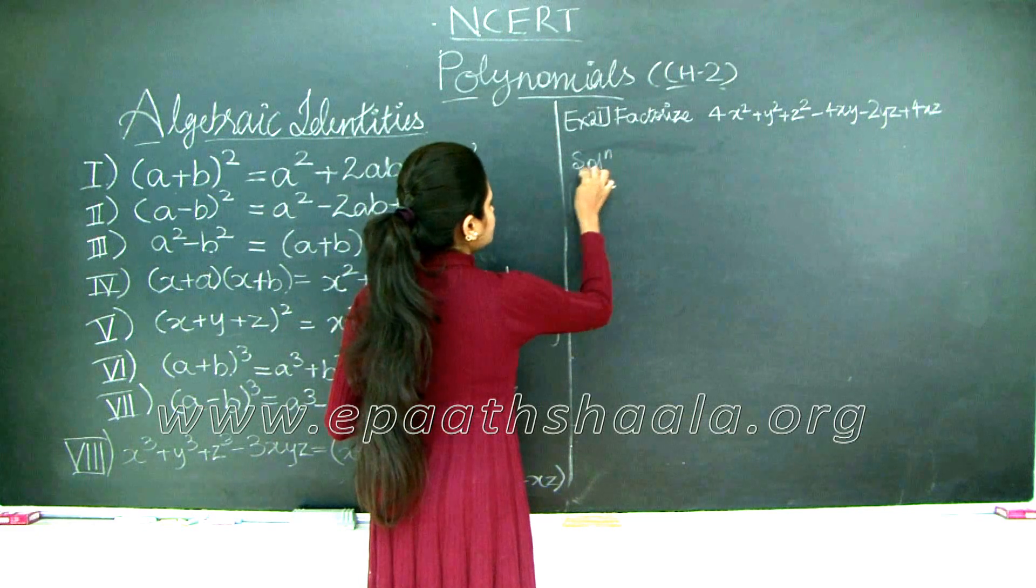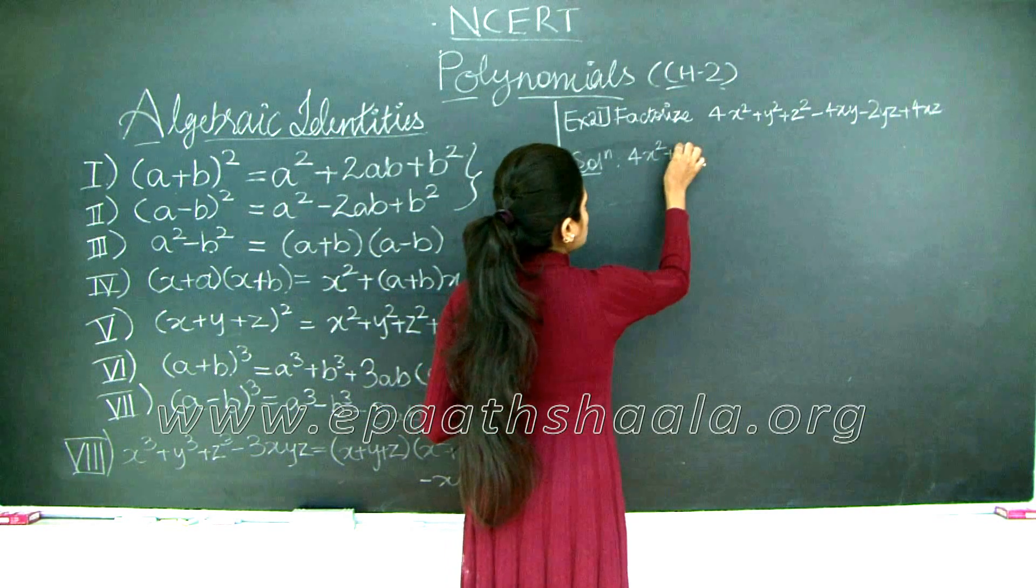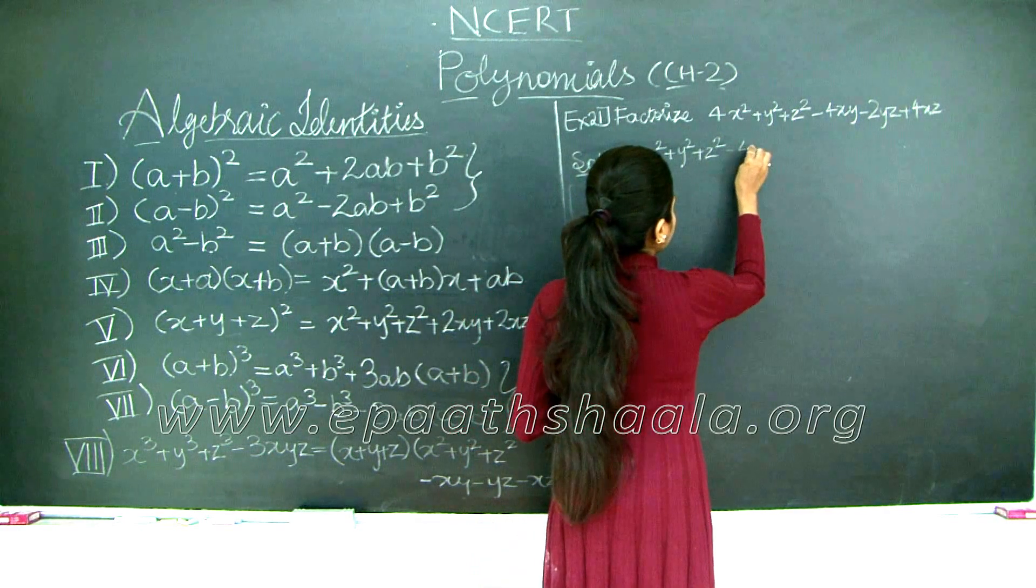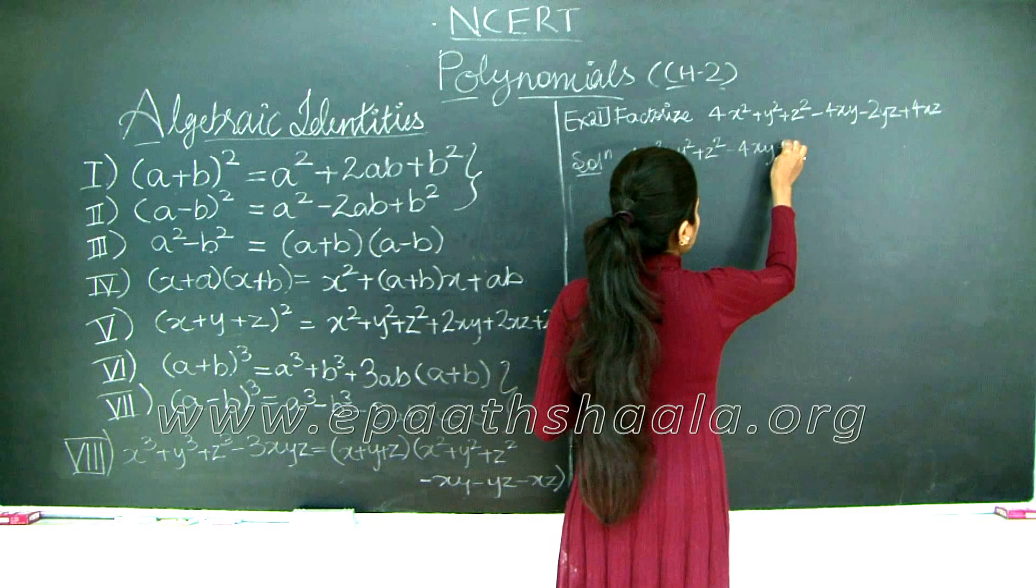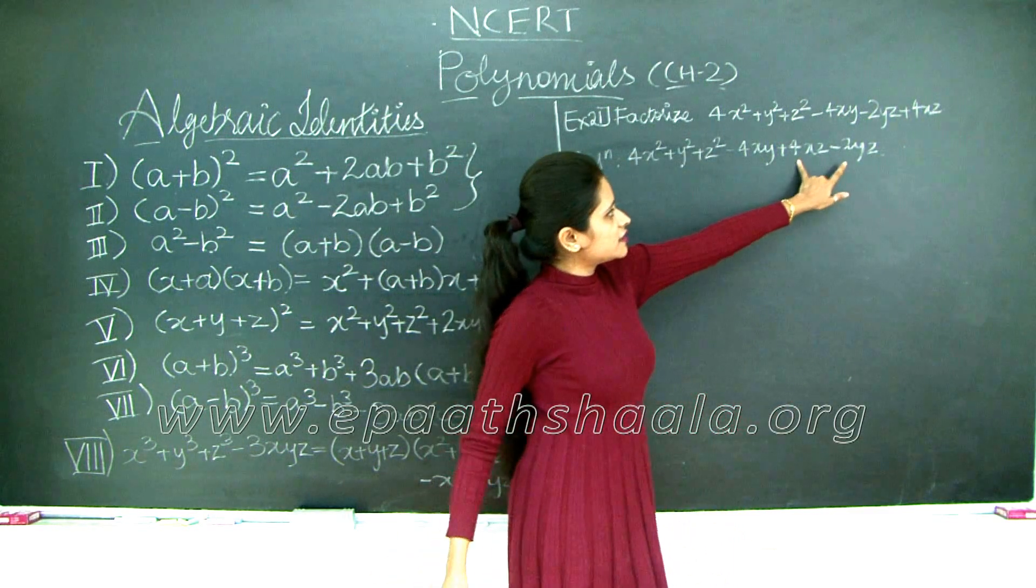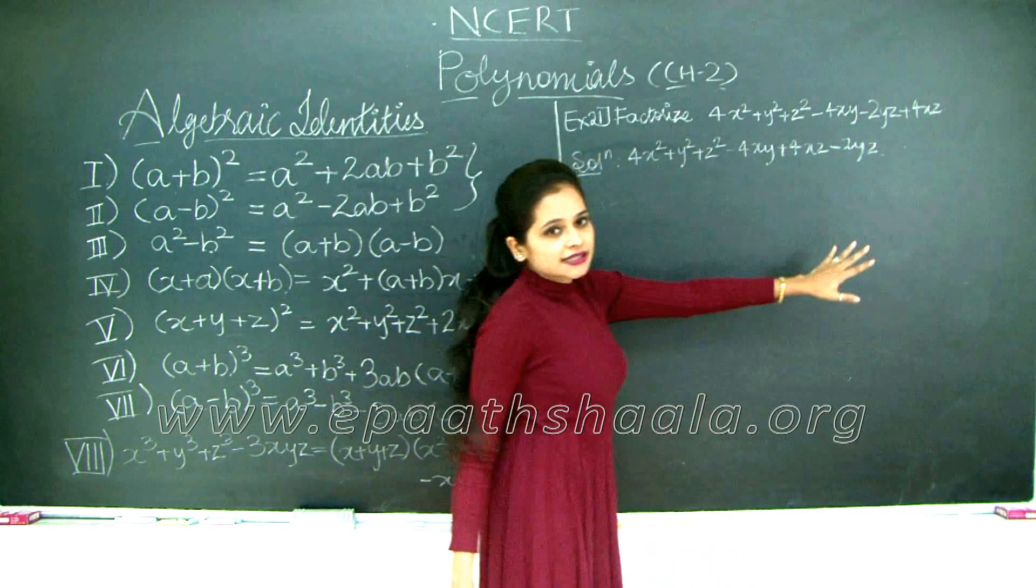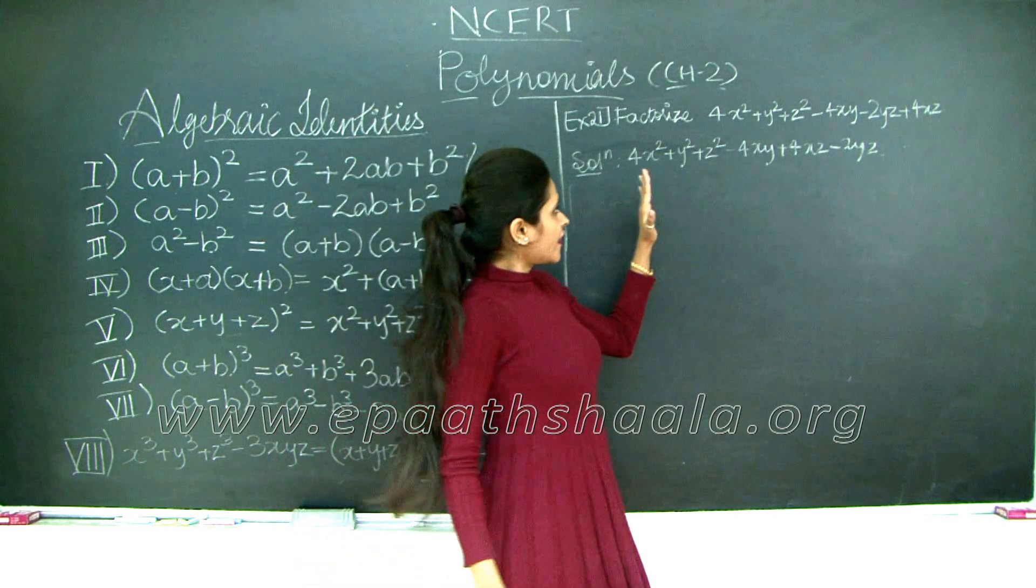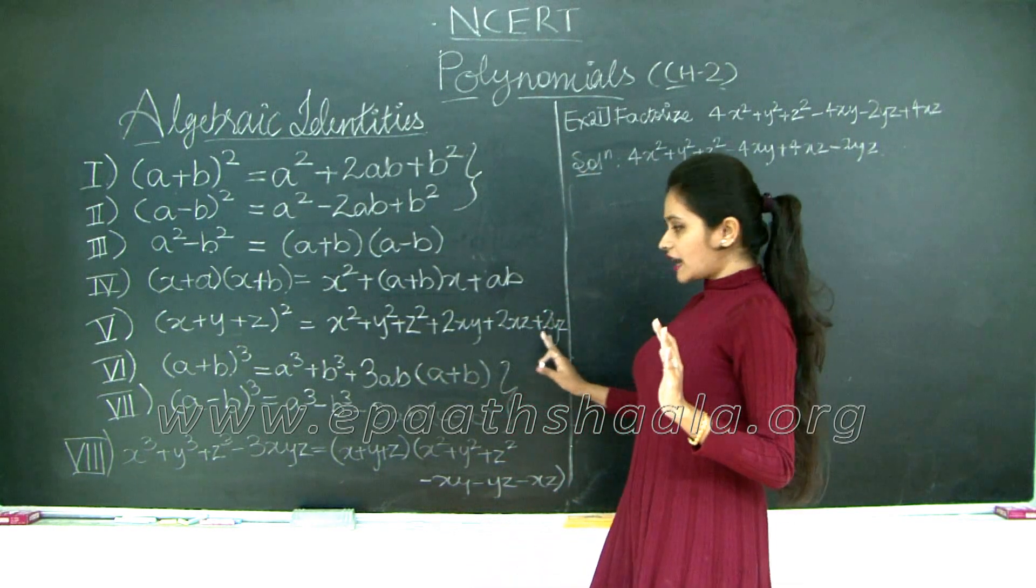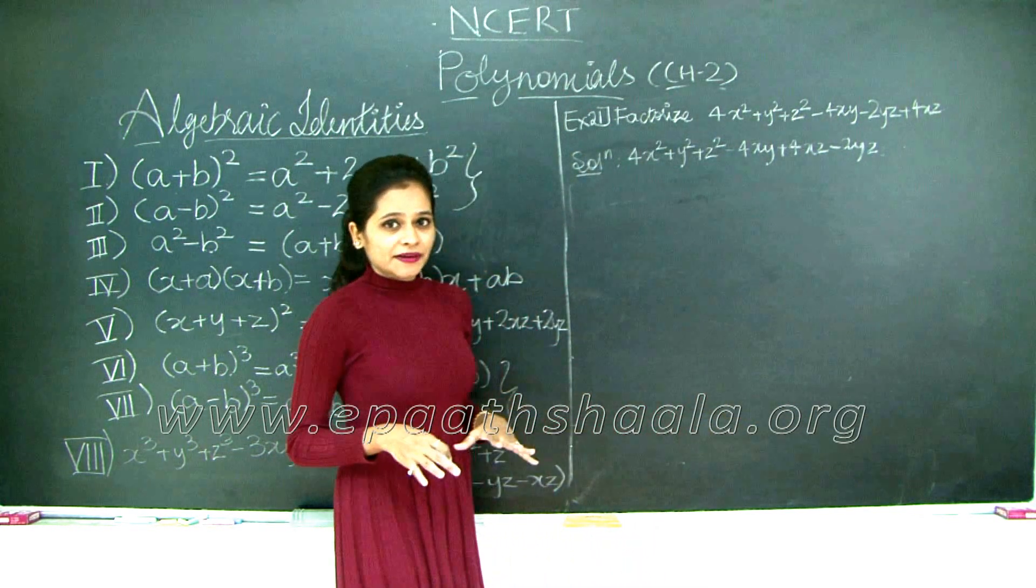So solution: we have 4x square plus y square plus z square minus 4xy plus 4xz minus 2yz. I have just shuffled these two terms - I have written 4xz first and minus 2yz. The sum doesn't change. Now you would be wondering that here we have positive signs, but why do we have negatives here? How are we going to solve this further? Let's take it one step at a time.